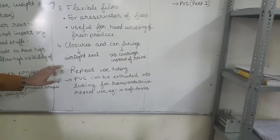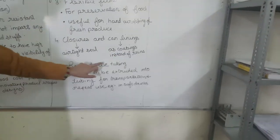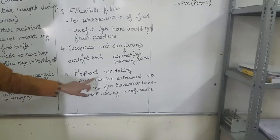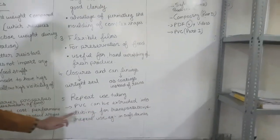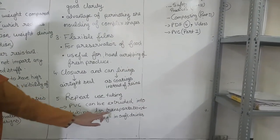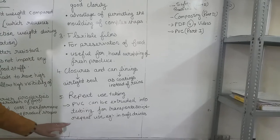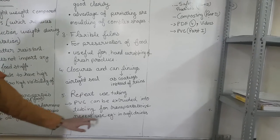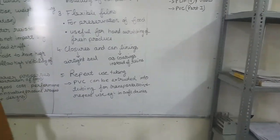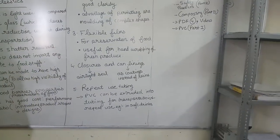The fifth use is repeat-use tubing. PVC can be extruded into tubing for transportation and repeated use, for example in soft drinks. This is all about PVC.